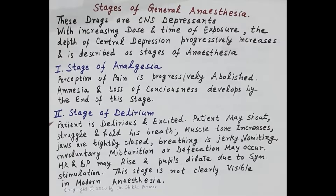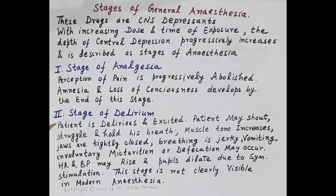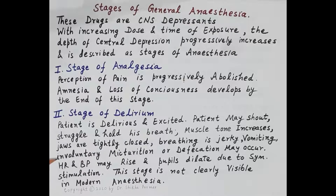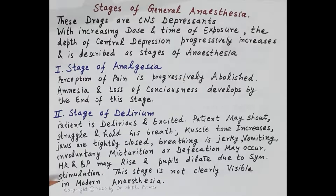The second stage is the stage of delirium — delirium means a disturbed state of mind. The patient is excited; the patient may shout, struggle, and hold their mouth. Muscle tone increases, jaws are tightly closed, and breathing is jerky. There can be induction of vomiting, and involuntary micturition or defecation can also occur. Heart rate and blood pressure may rise, and pupils dilate due to sympathetic stimulation. However, this stage is not clearly visible with the use of modern anaesthetics.